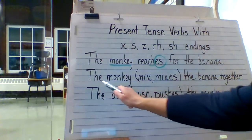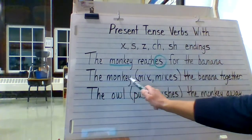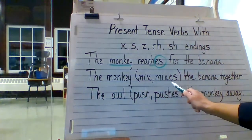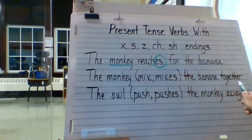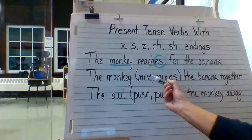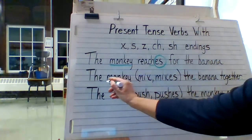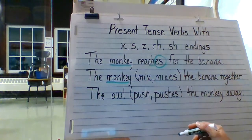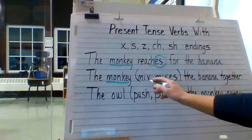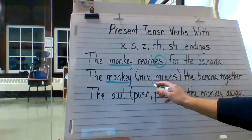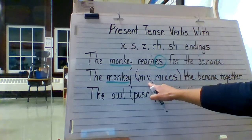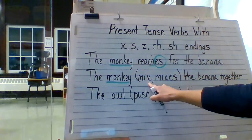Let's take a look at the next example: the monkey mix or mixes the banana together. So again, we have one subject — monkey — and we're using the verb mix. Now mix ends in one of those letters that we have to add ES to.